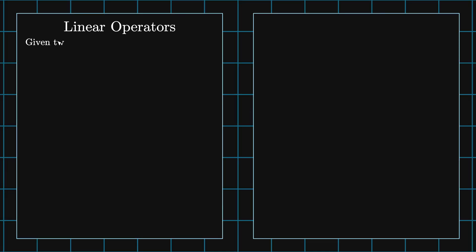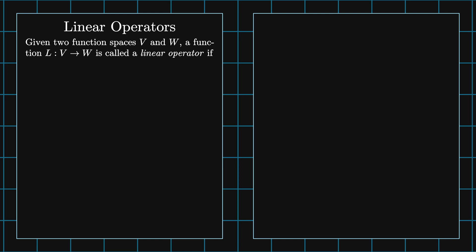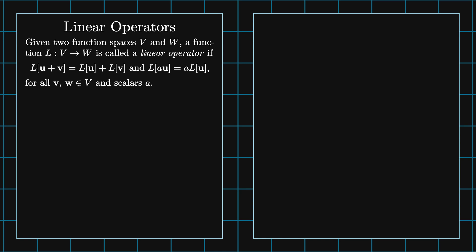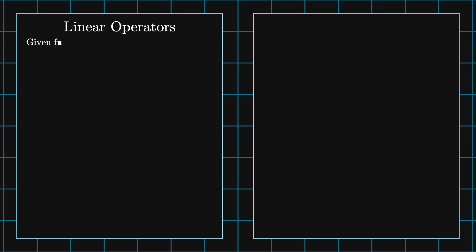Given two function spaces V and W, a function L, which is a map from V to W, is called a linear operator if L of U plus V equals L of U plus L of V, and L of A times U equals A times L of U, for all U and V in the function space V and any scalar A. V is called the domain of L and W is called its codomain.